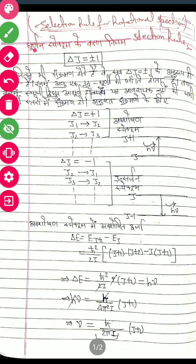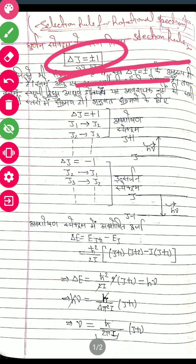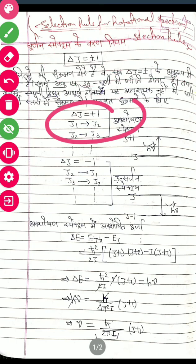Selection rule for rotational spectrum: delta J equals plus minus 1. For delta J over plus 1, J1 is J2, J2 is J3. For delta J over minus 1, J2 is J1, J3 is J2.